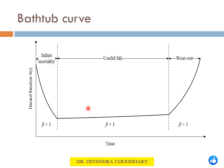The bathtub curve starts with the early failure region where the hazard function decreases with time. This is also known as the burn-in period or infant mortality period. In this phase, weak items are weeded out, and we can observe this infant mortality phase for most electronic items. Poor manufacturing processes, wrong handling and packaging, incorrect installation or setup, and power surges are a few reasons for early failure.